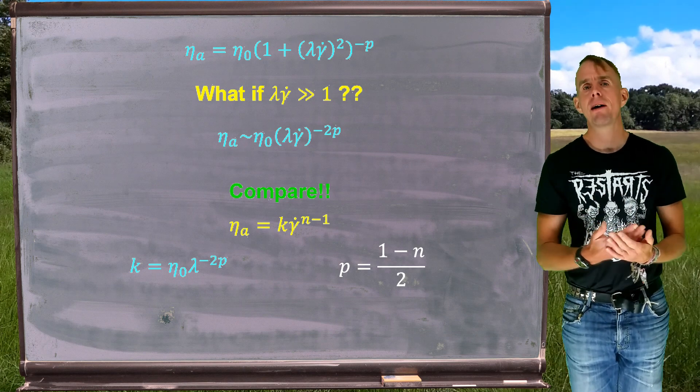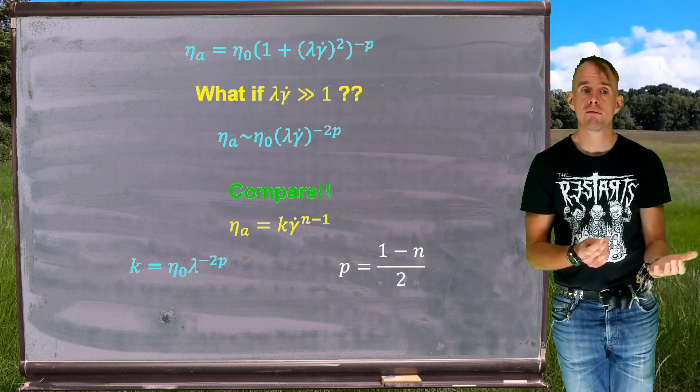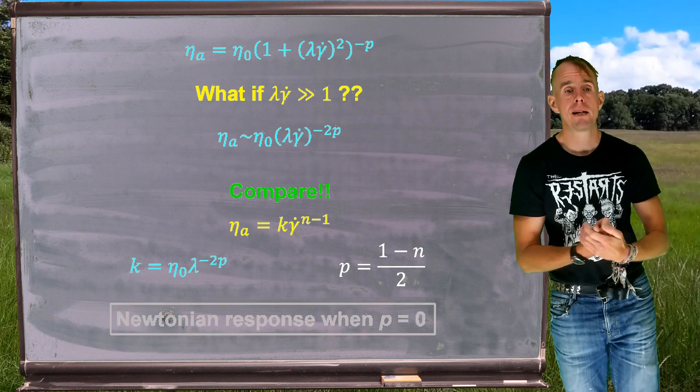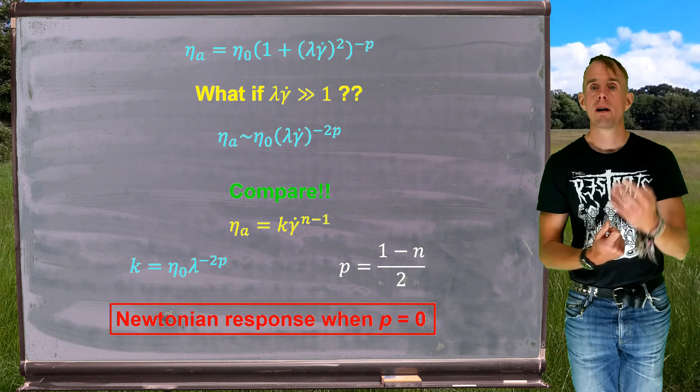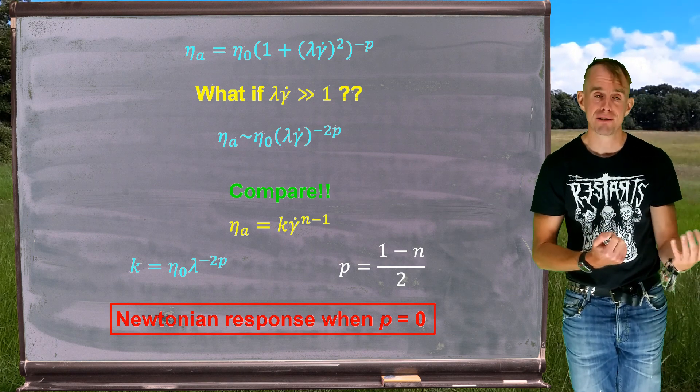And so if we think about how we check a given result algebraically against a Newtonian result, we can see how we manipulate the values of p now to ensure that check. So when p equals zero, the Carreau fluid reverts to a Newtonian fluid. Very useful.